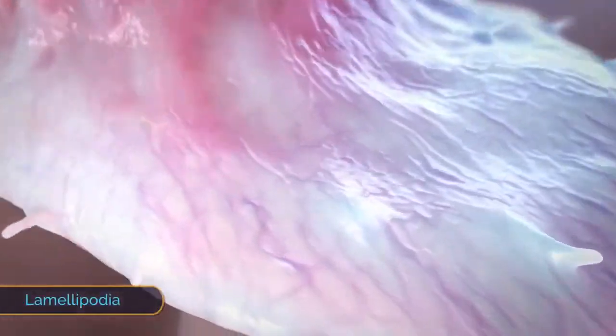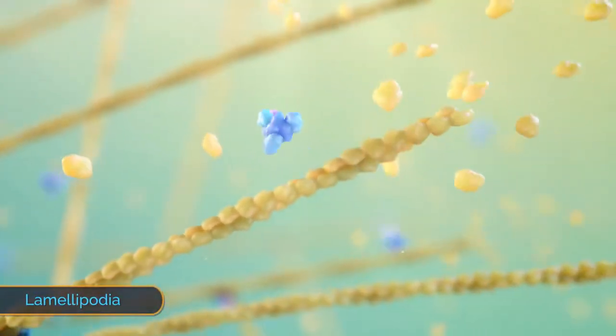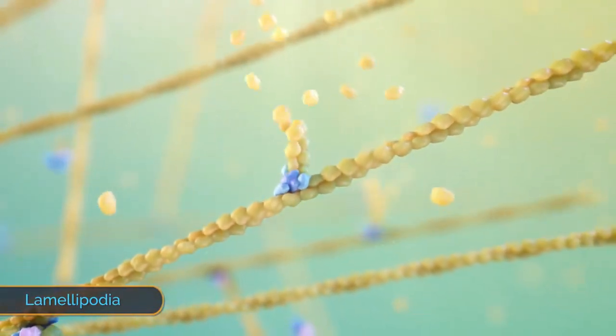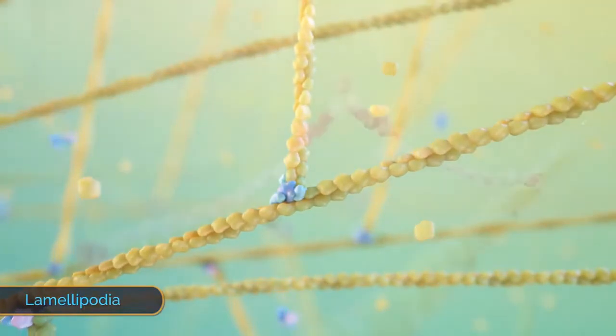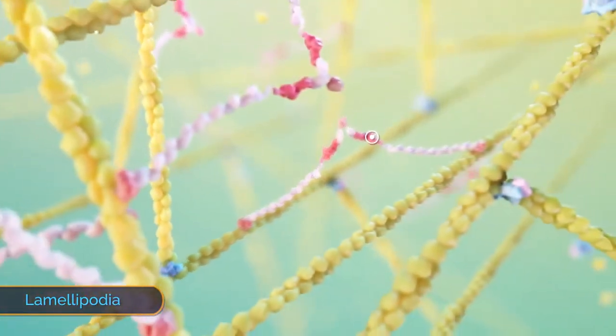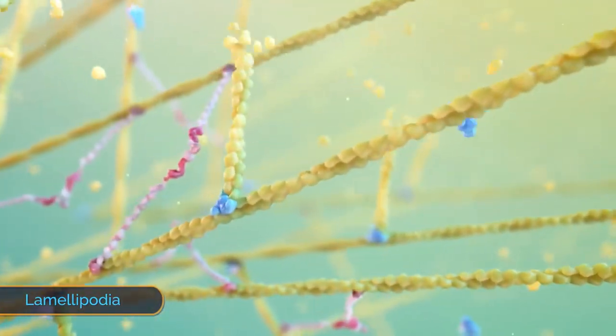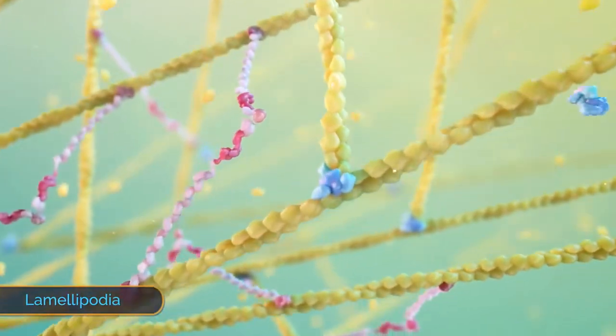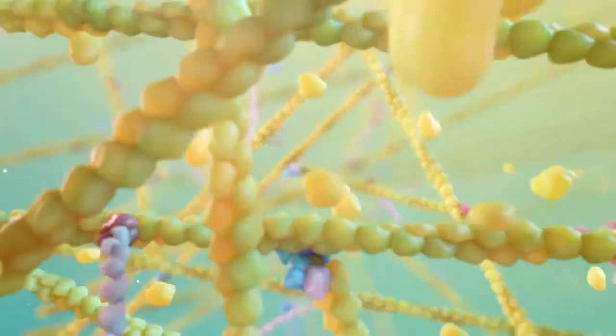In lamellipodia, an actin-binding protein complex, Arp2/3, binds near the leading end of newly formed actin filaments and nucleates branching. Large cross-linking proteins such as filamin bind to these actin filaments and support the structure of this branched network. This continuous branching off and cross-linking strengthens the protrusive force needed to overcome the compressive force of the plasma membrane.